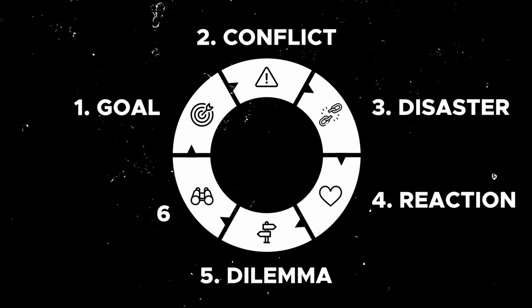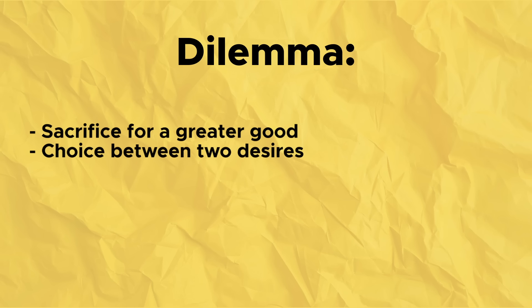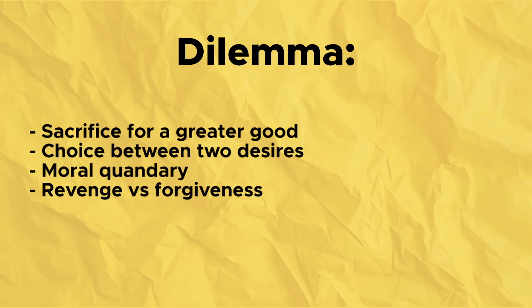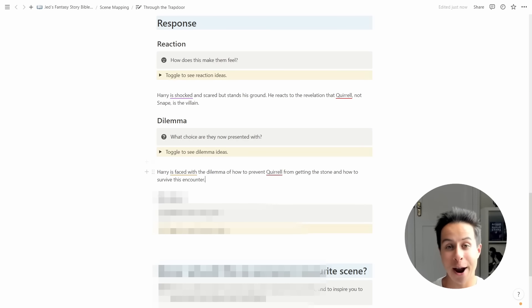This leads into the fifth step of our scene structure: the dilemma. A disaster has just occurred, the character has reacted emotionally, and now they're presented with a choice. This is really pivotal because true character is revealed in the choices a person makes under pressure — the greater the pressure, the greater the depth of true character revealed. Your character might be forced to sacrifice for a greater good, choose between two equally bad desires, face a moral quandary between revenge or forgiveness, or decide whether to abandon their plan or continue. In Harry Potter, Harry is presented with the dilemma of how to stop Quirrell from getting the stone from the Mirror of Erised — because once Quirrell gets it, Voldemort will achieve immortality — and also how Harry can survive this encounter.